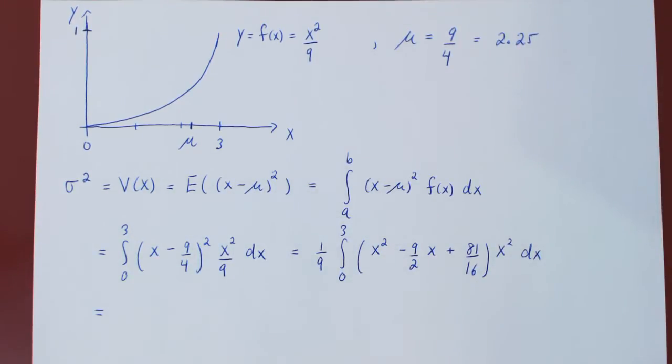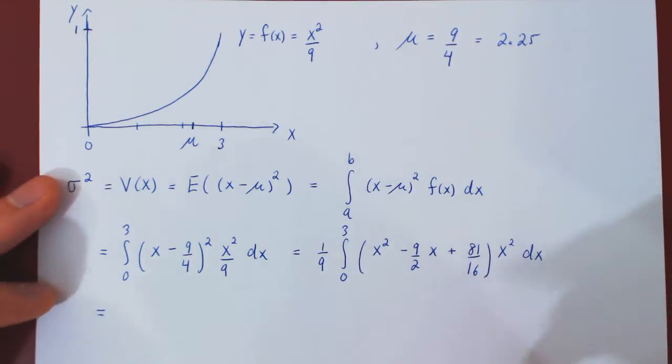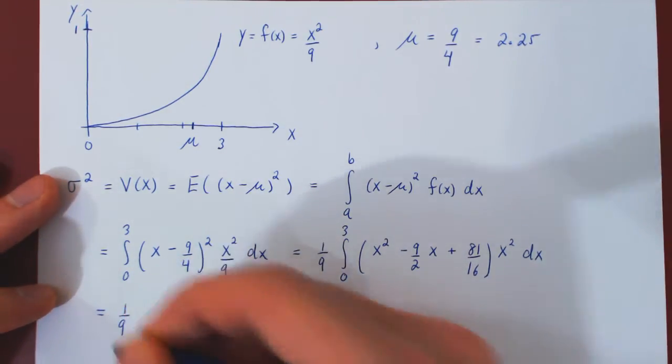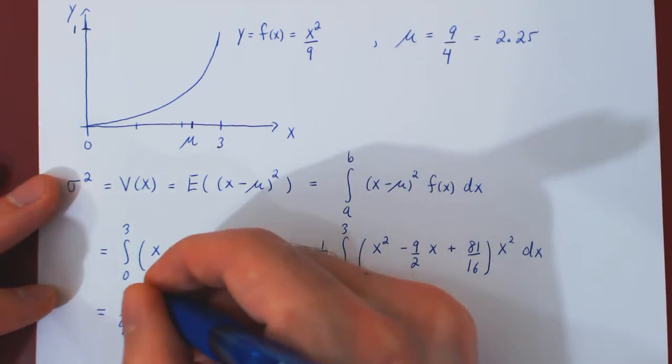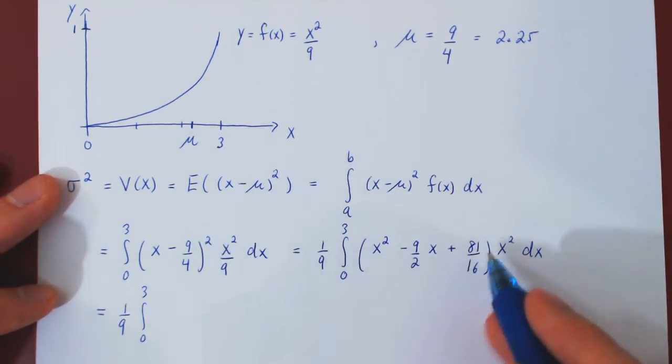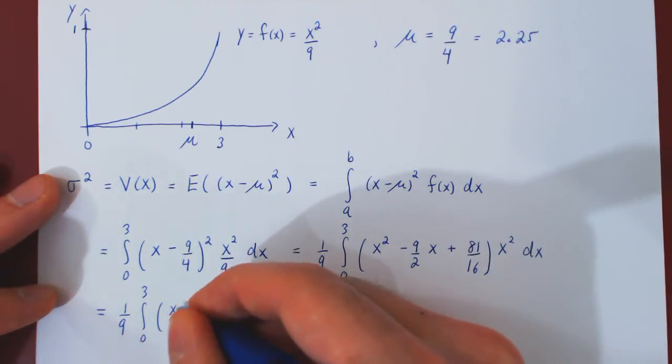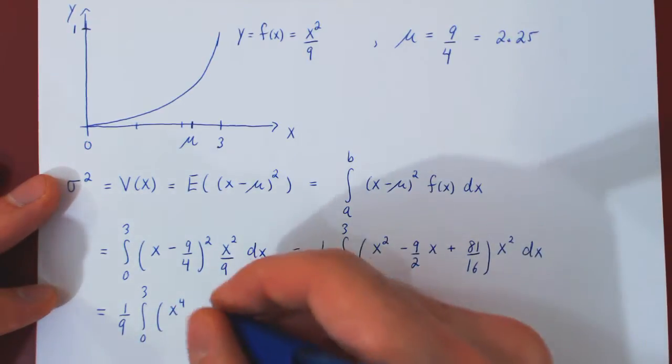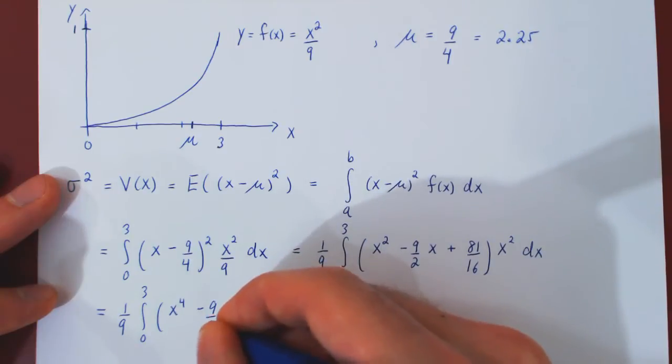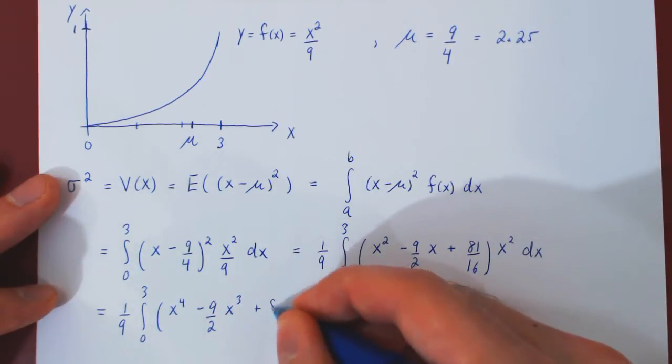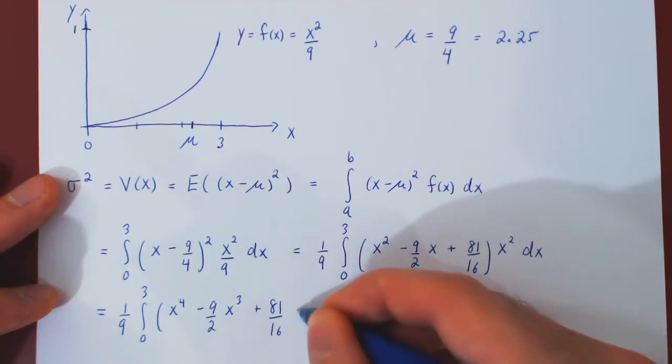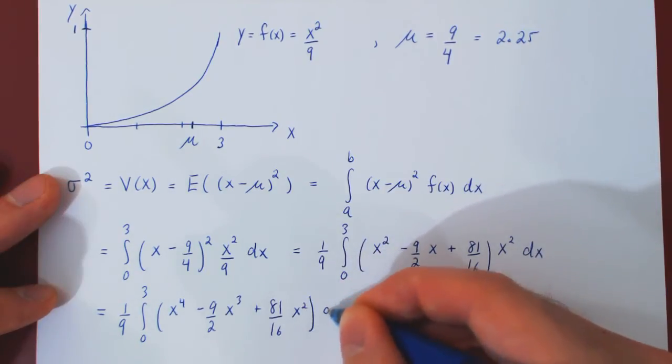Well, multiply through by x squared and you will now have a very simple problem. So, we have to integrate from 0 to 3, x to the 4, minus 9 over 2 x cubed, plus 81 over 16 x squared, with respect to x.